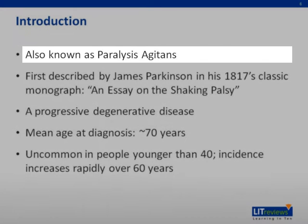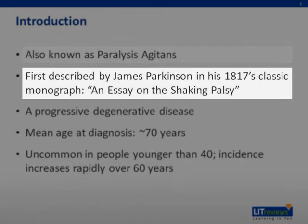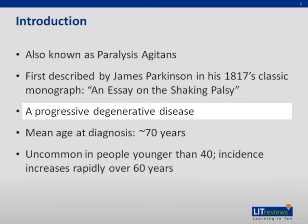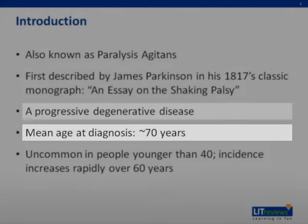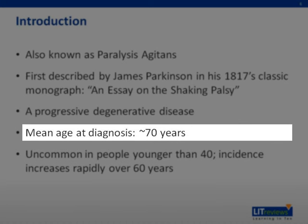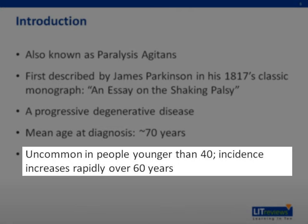Parkinson's disease was also known as paralysis agitans and was first described by James Parkinson in his 1817 classic monograph, An Essay on the Shaking Palsy. Parkinson's disease is a progressive degenerative disease with a mean age of diagnosis of 70 years. It is uncommon in people younger than 40, and incidence increases rapidly over the age of 60.